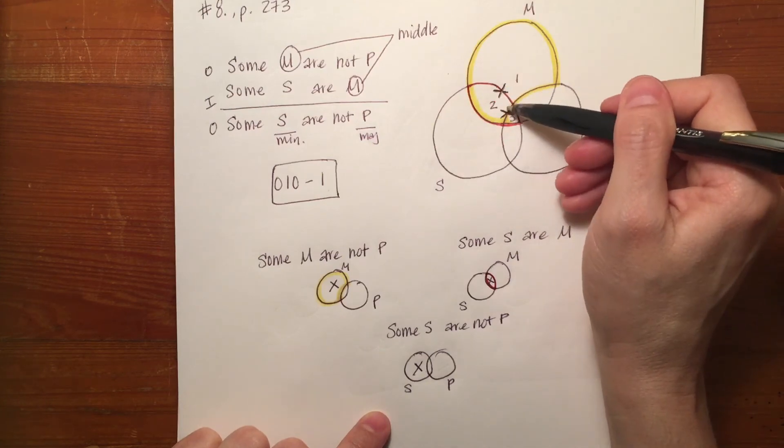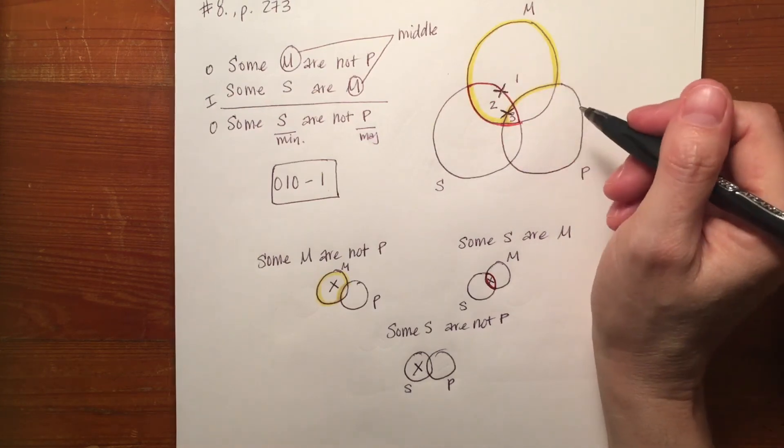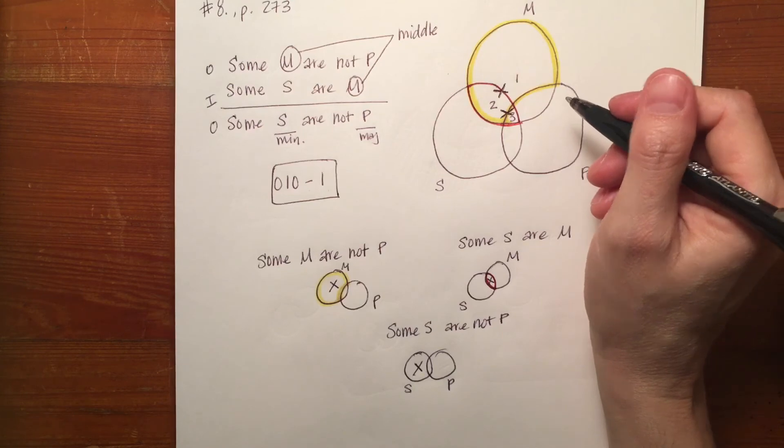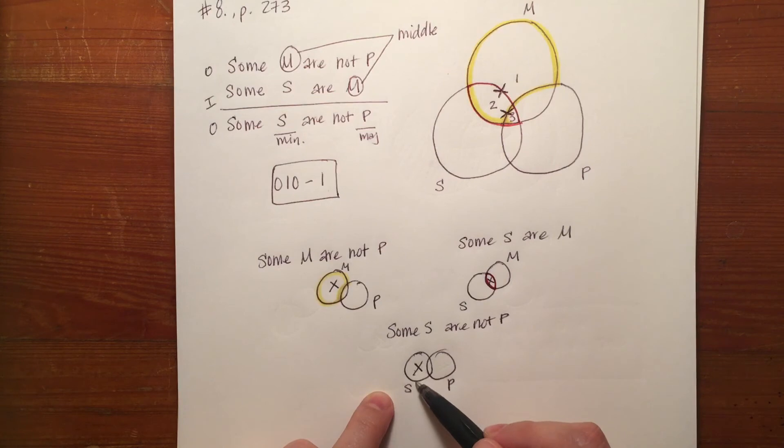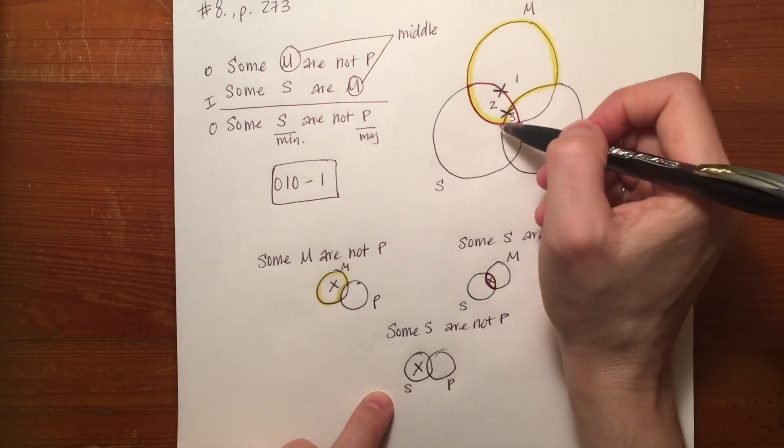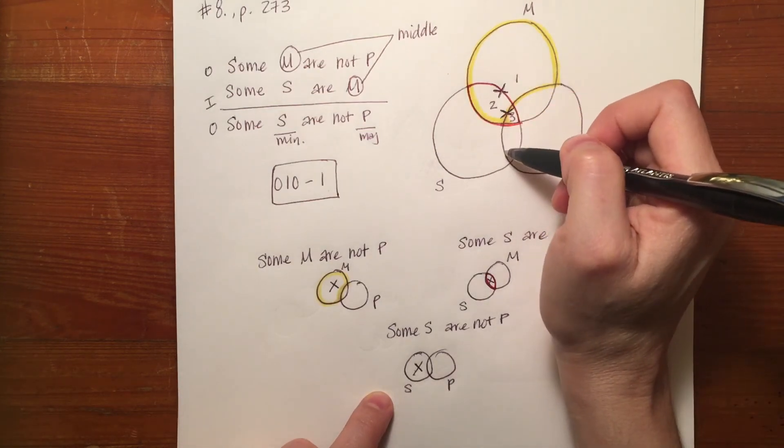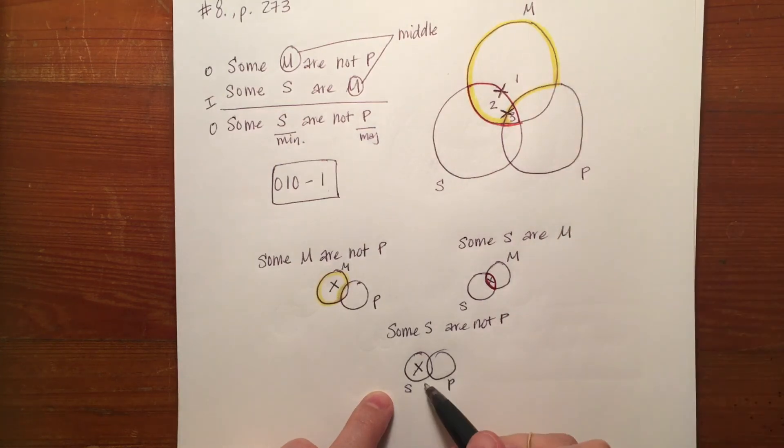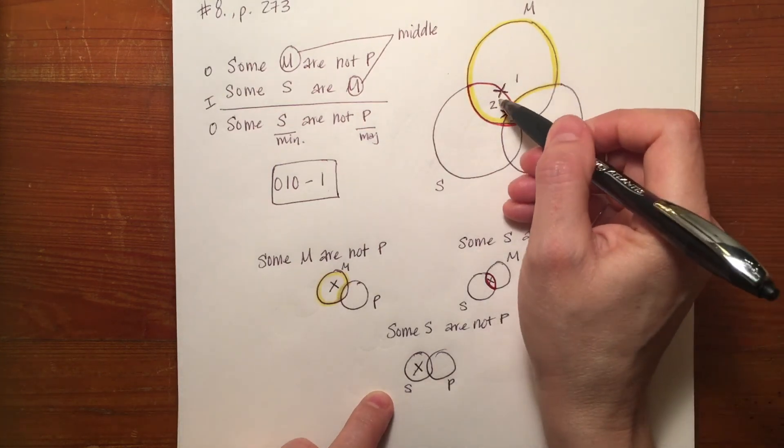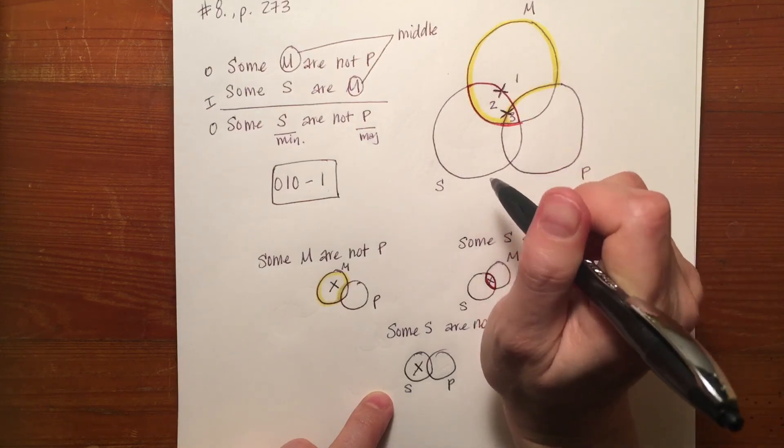Well, when there are two particular premises, it's a little difficult to tell. My guess would be, looking at this diagram, if you're asking is the information from the conclusion in this diagram after entering in the two premises, I would say no. I don't see that X in the larger part of S.